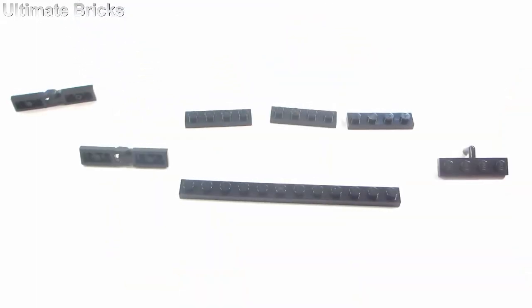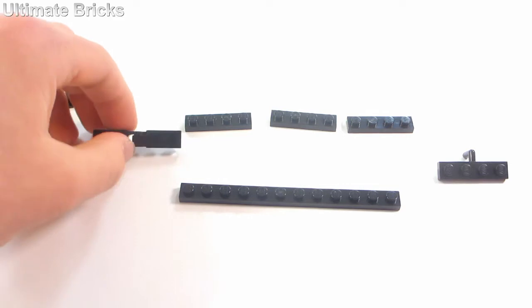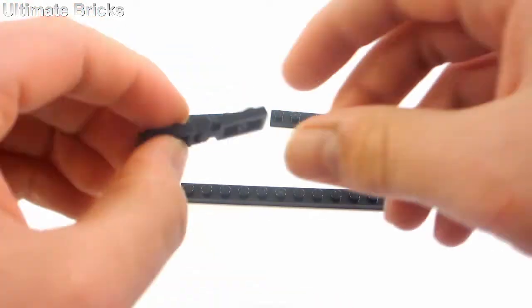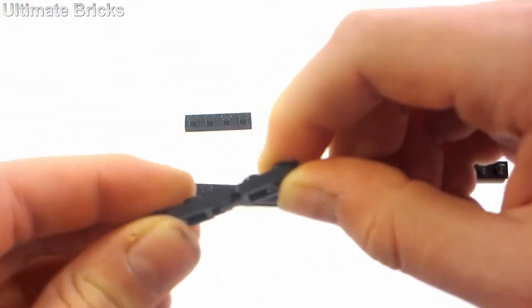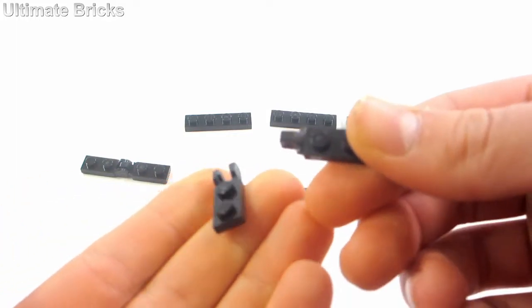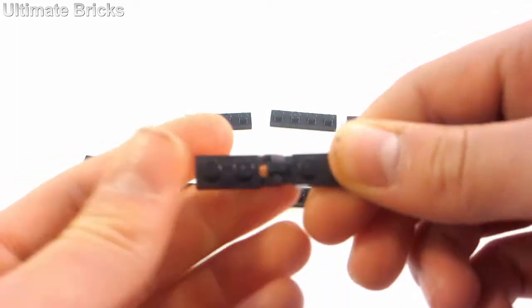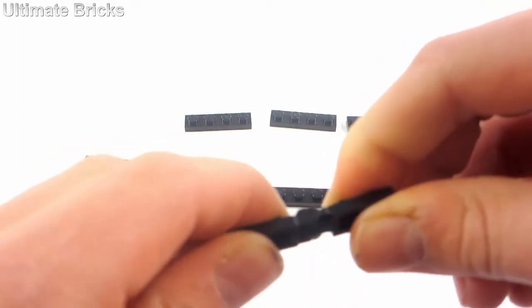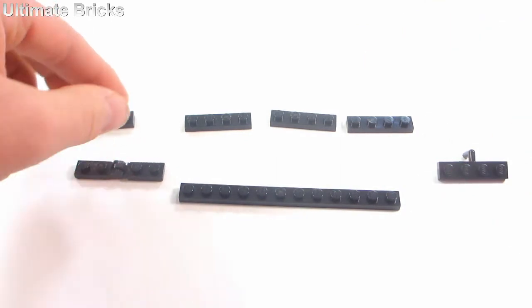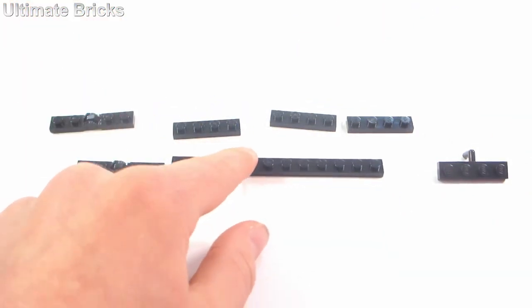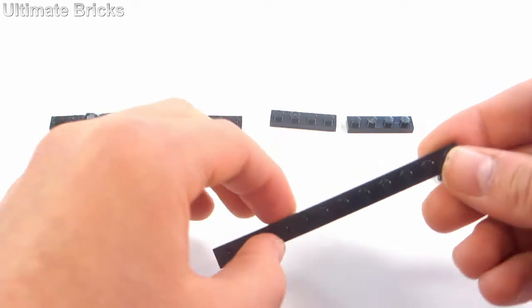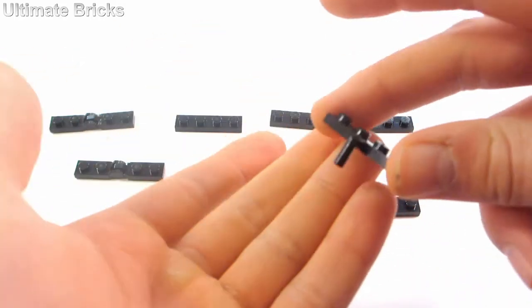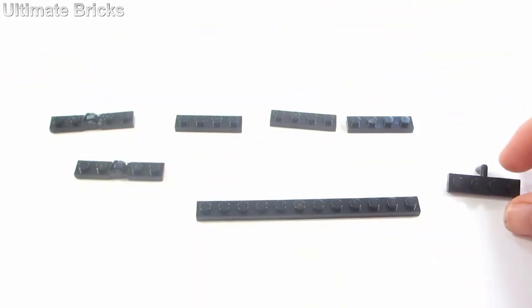The next segment will require these pieces right here. Two of these click joint assemblies—they're technically four pieces because each one is two. You'll need two pairs, perfectly in the same color as the glasses. Then you'll need three one by fours and one one by ten, and then you'll need another one of these. Keep in mind this is per side.